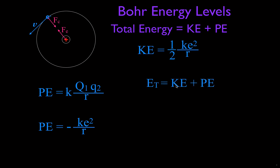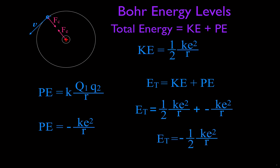Now we have the kinetic energy and the potential energy, so we add those two terms to get the total energy. We have ½ke²/r plus (−ke²/r), which gives us ½ plus (−1) equals −½. So the total energy is equal to minus one half ke² divided by r. That is the equation we can use to calculate the energy at the ground state and each of the excited states in a hydrogen atom.